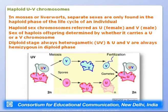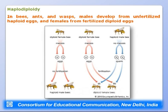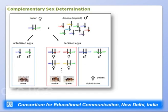In bees, ants, and wasps, males develop from unfertilized haploid eggs and females from fertilized diploid eggs — a system called haplodiploidy. Diploid female bees produce haploid male bees without fertilization via a process called arrhenotoky. When diploid female gametes and haploid male gametes fuse, they give rise to diploid female bees.